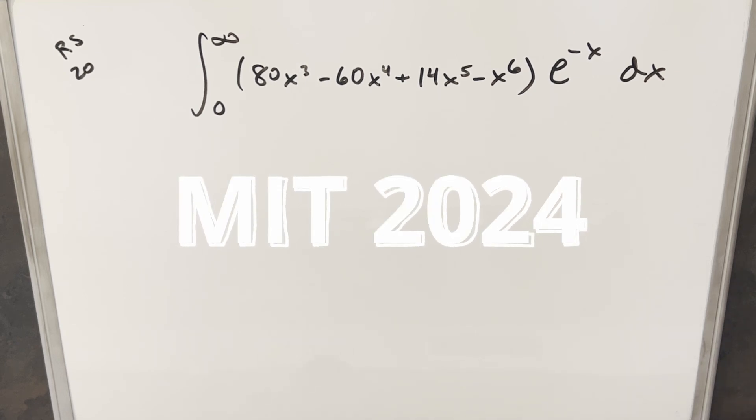Okay, we have a Taylor integral from the MIT Integration Bee 2024. This was regular season problem number 20. We have the integral from zero to infinity of 80x³ - 60x⁴ + 14x⁵ - x⁶ times e^(-x) dx.